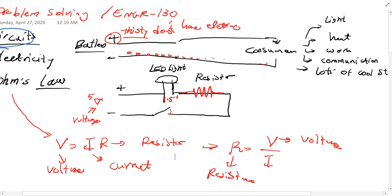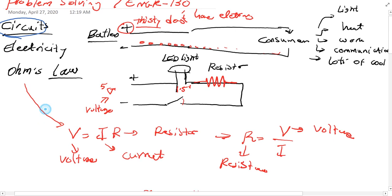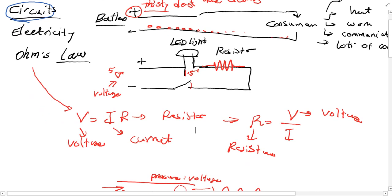Now if there is no consumer, there is going to be simply a spark. The consumer can be creating light, heat, work, communication, or lots of other cool stuff that you have on your phone. So consider one scenario: you want to turn on an LED light. If you close the switch, electricity will go there and turn on the LED light.